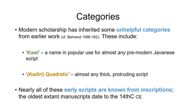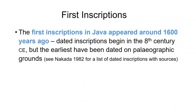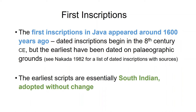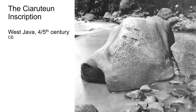The first inscriptions in Java appeared about 1,600 years ago. The oldest dated inscriptions are from the 8th century, but the earliest have been dated on paleographic grounds — which is easy because the earliest scripts are basically South Indian scripts adopted without change. It's probable the first scribes were themselves from South India, since the language is Sanskrit and the script is called Pallava. One of the oldest inscriptions in Java is from West Java, the Ciaruteun inscription, dating to the 4th or 5th century.